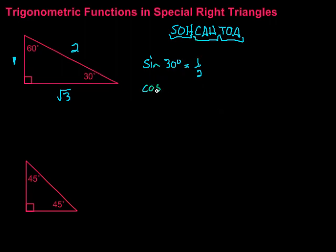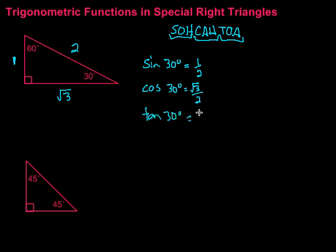The cosine of 30 degrees is adjacent over hypotenuse, which gives us the square root of 3 over 2. Then the tangent of 30 degrees is opposite over adjacent — that's 1 over the square root of 3. We can't leave a radical in the denominator, so we rationalize by multiplying by the square root of 3 on top and bottom, giving us the square root of 3 over 3.